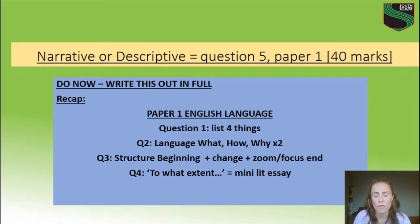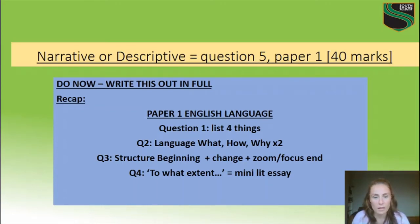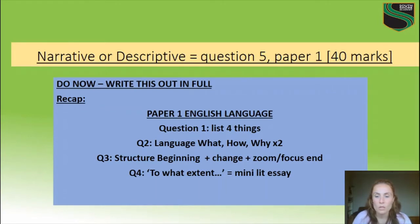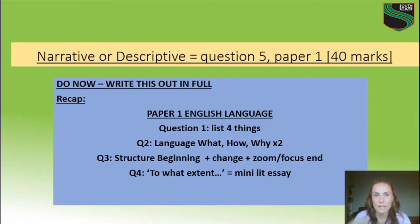Why would ellipsis be used there? Why is the metaphor for the storm really important? Why not just say it's a storm? Then Question 3 is the structure question — what I ask you to do in that is three shorter paragraphs, not as big as the two what-how-why, but three short paragraphs focusing on the beginning, a change plus a zoom, and a focus at the end. So: a beginning, plus a change, and then towards the end there'll be a zoom or a focus — something is switched and who the camera or who the writer is focused on towards the end of the piece. And then Question 4 is the 'to what extent' mini literature essay, where you need to evaluate and give your opinion on the statement about the character — for example, weighing up whether a character was well prepared or acting out of fear.